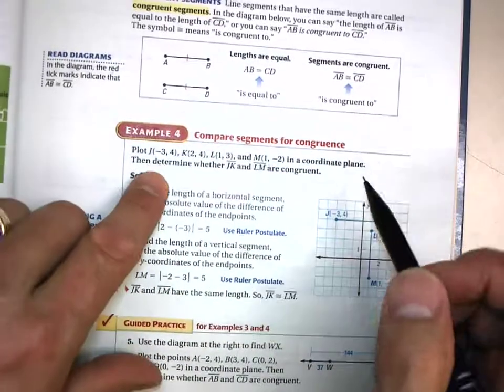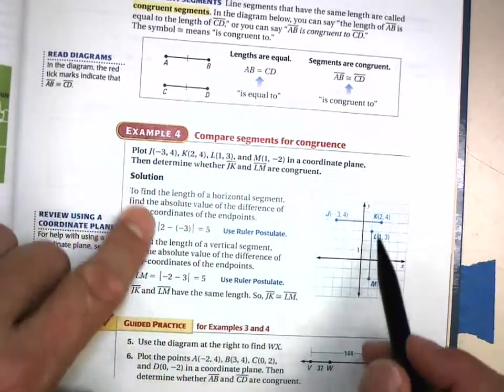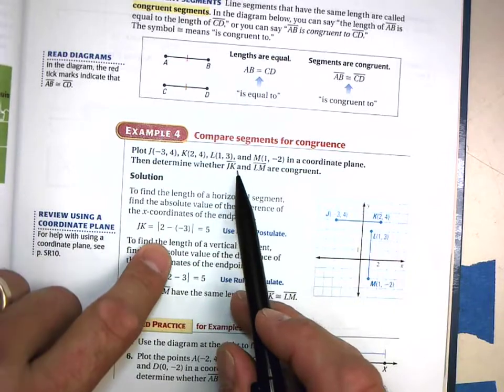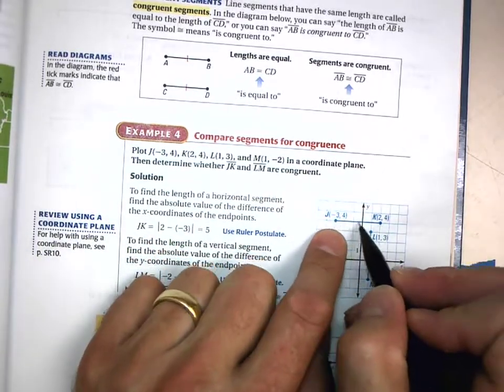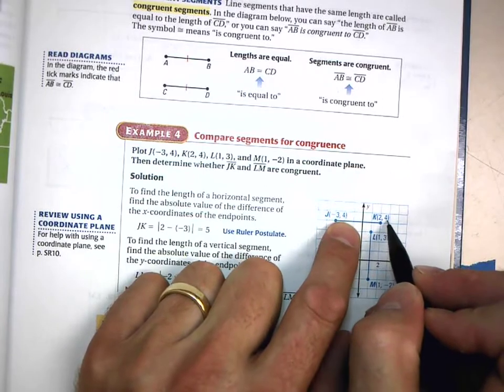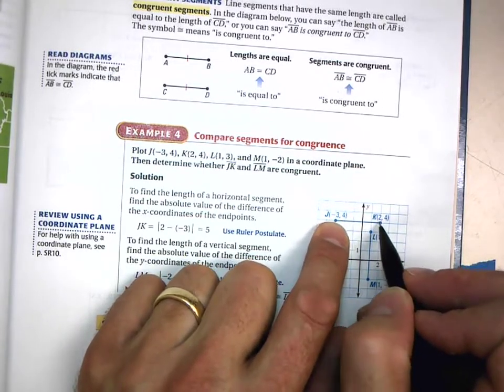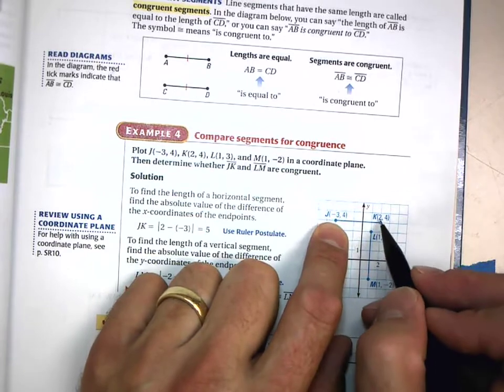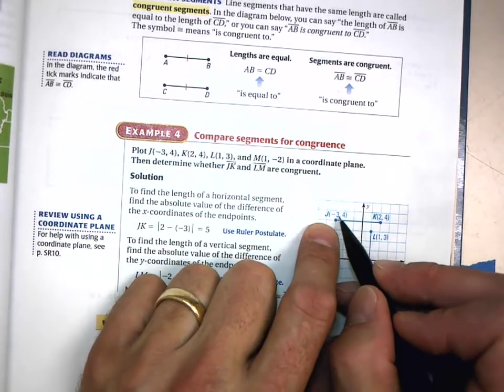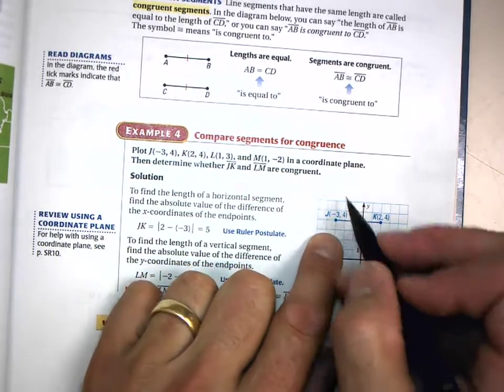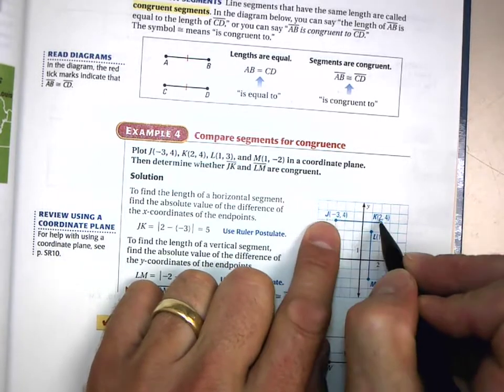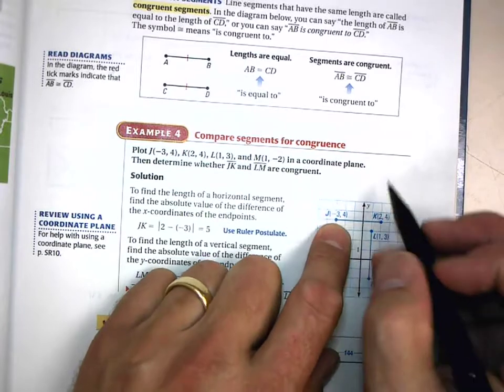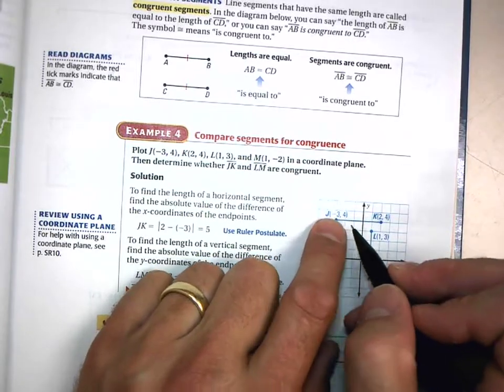Example number four: We're going to plot these points and determine whether these two are congruent. Notice that the y-coordinates are the same but the x-coordinates are different. What is the distance from negative 3 to 2? I could just count the blocks: one, two, three, four, five.